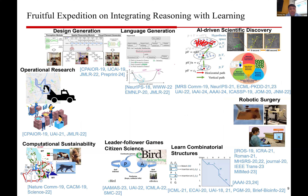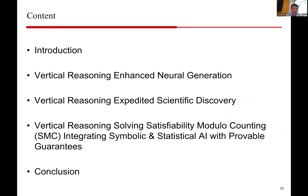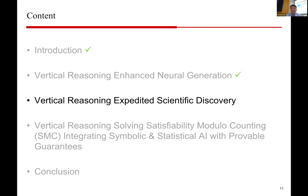In the last five years my research has covered a diverse set of domains: design generation, language generation, AI-driven scientific discovery, and more. There is a consistent theme of integrating automatic reasoning and machine learning. Today I'll use three examples to show that reasoning can enhance neural generation, expedite scientific discovery, and help solve satisfiability module counting problems, integrating symbolic and statistical AI with provable guarantees.